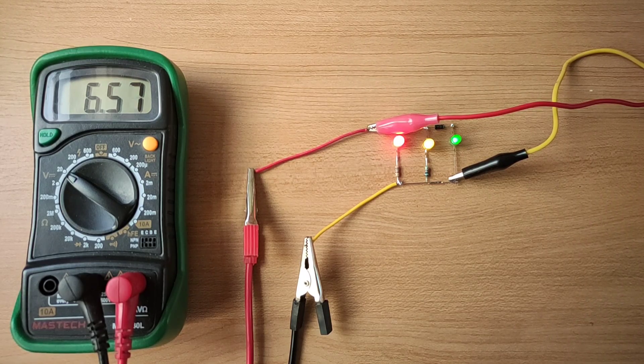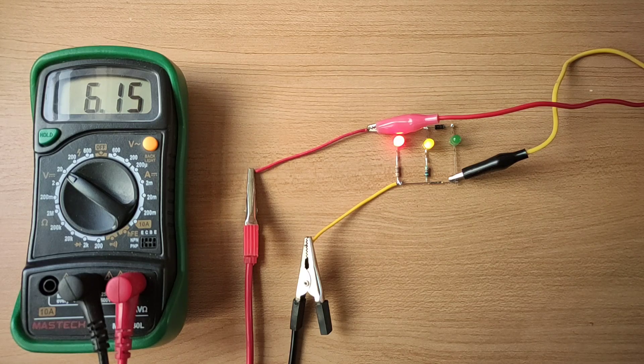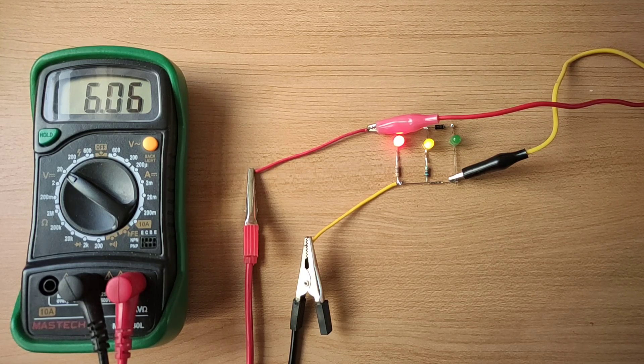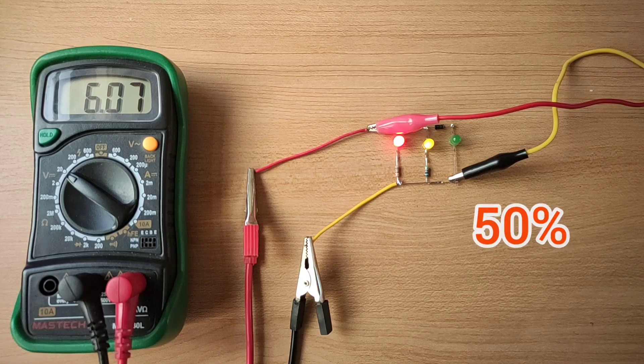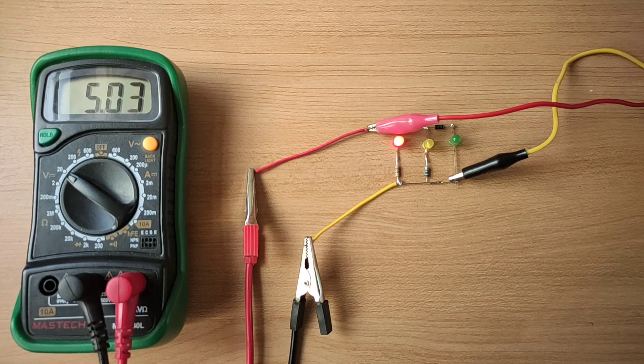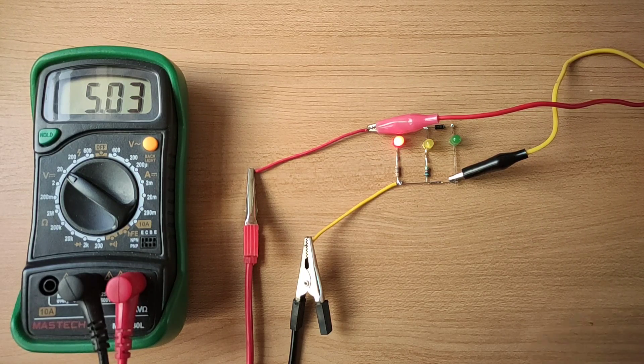Now on decreasing voltage to 6 volts, green LED turns off and indicates battery level as 50% left. And further on decreasing voltage to 5 volts, yellow LED also turns off.